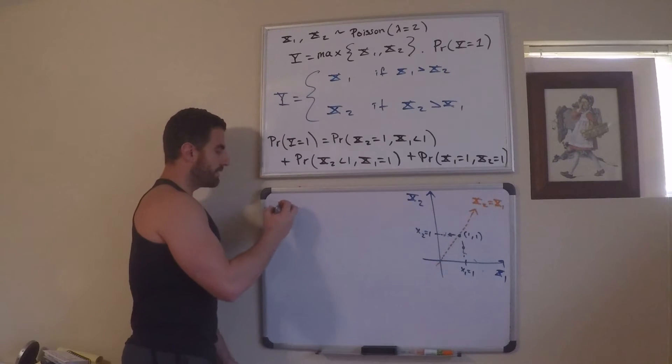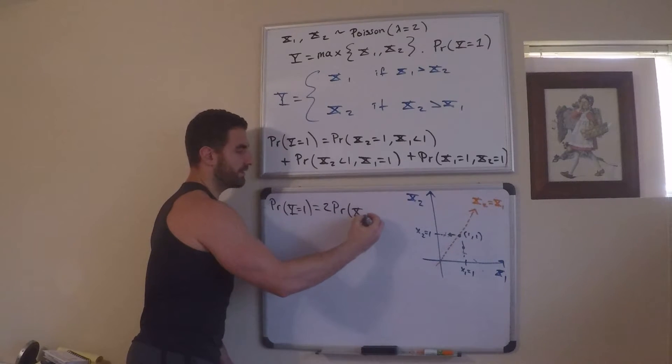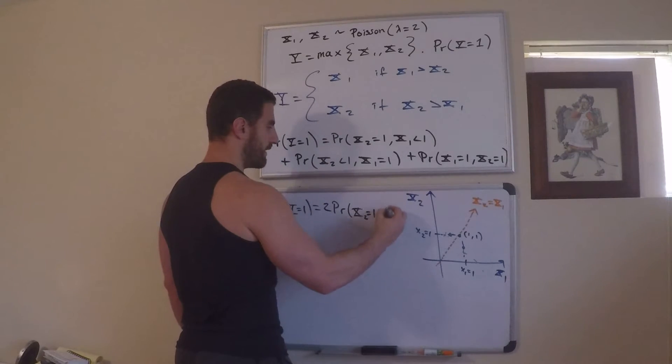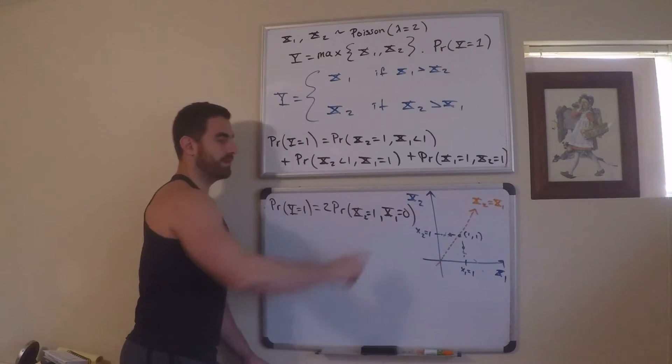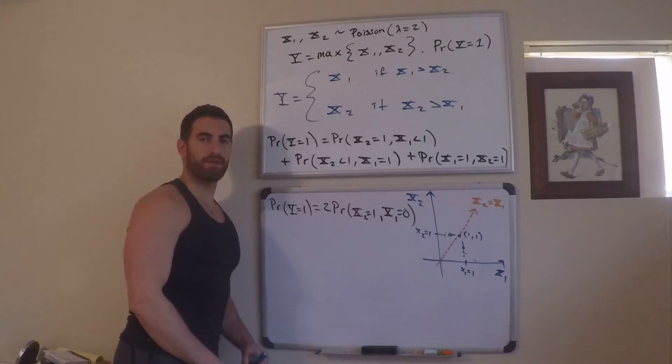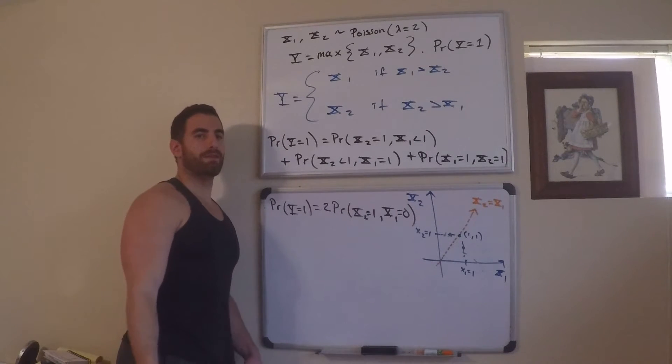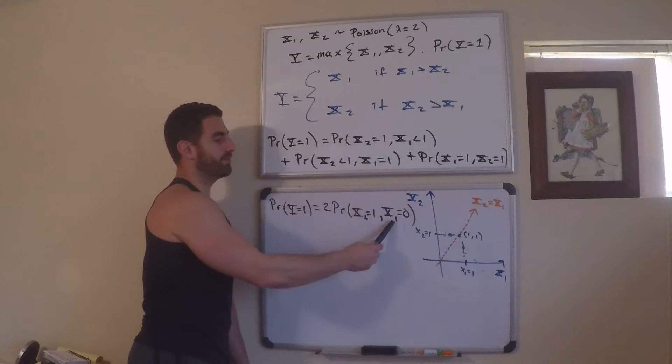So, what I can say is that now the probability that y equals 1 is equal to twice the probability that x2 is equal to 1 and x1 is equal to 0. Now, why did I put x1 equals 0 here? Because x1 is less than 1. The random variable x1 is Poisson. It only takes on the value of 0, 1, 2, 3, natural numbers up to infinity. And if x1 is less than 1, the only value it can take on is 0.